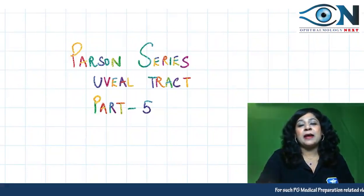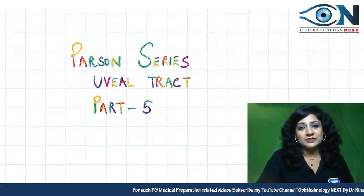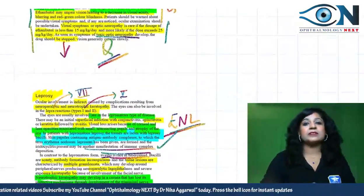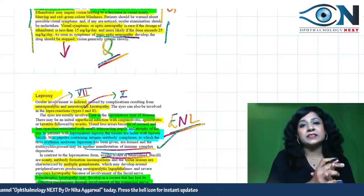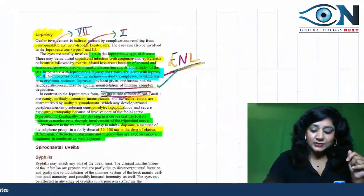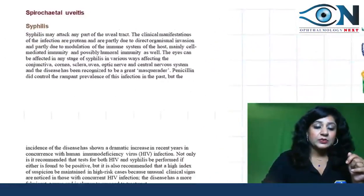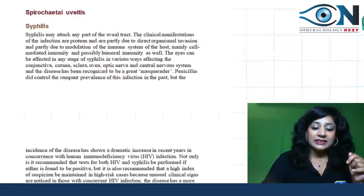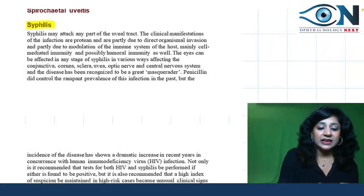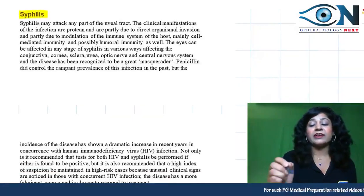Hello guys, welcome to the Parson series. This is part 5 of the uveal tract. Last time we were talking about uveitis related to tuberculosis and leprosy. Today we are going to start with spirochetal uveitis, and the topmost in this list will always be syphilis.